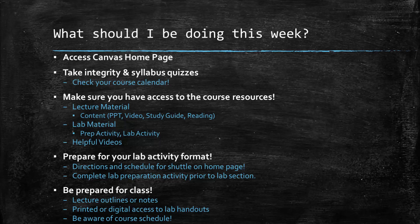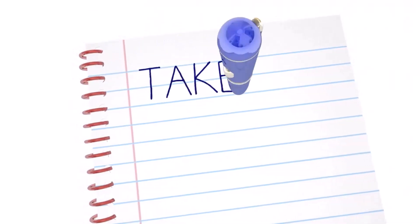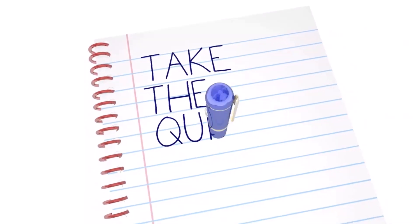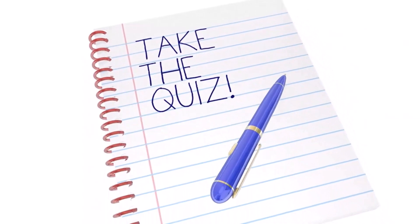I want to hit those again for the first week here on our online lecture, just so that you understand what you should be doing, because there's a lot of content in this class. Step one: make sure that you read the syllabus. Second, take those syllabus and integrity quizzes. The due dates are posted on the quiz link, so take a look at those. Nothing will open for you until you take the integrity and syllabus quizzes — you cannot get a hold of lecture or lab material until those quizzes are done.